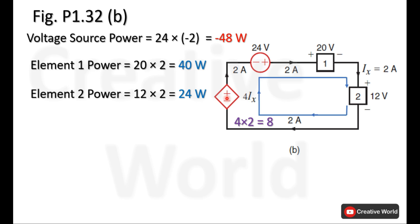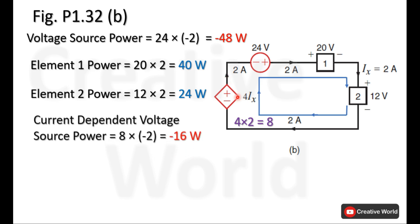Before calculating the power of the current dependent voltage source, we calculate the voltage across it. Its voltage equation is 4 multiplied by ix; the value of ix is 2 amperes, so the voltage across this element will be 4 multiplied by 2, equal to 8 volts. The current dependent voltage source power will be 8 volts multiplied by minus 2 amperes, since the current is entering from the negative terminal and leaving from the positive terminal, so this current is taken with a minus sign. This element is supplying 16 watts.